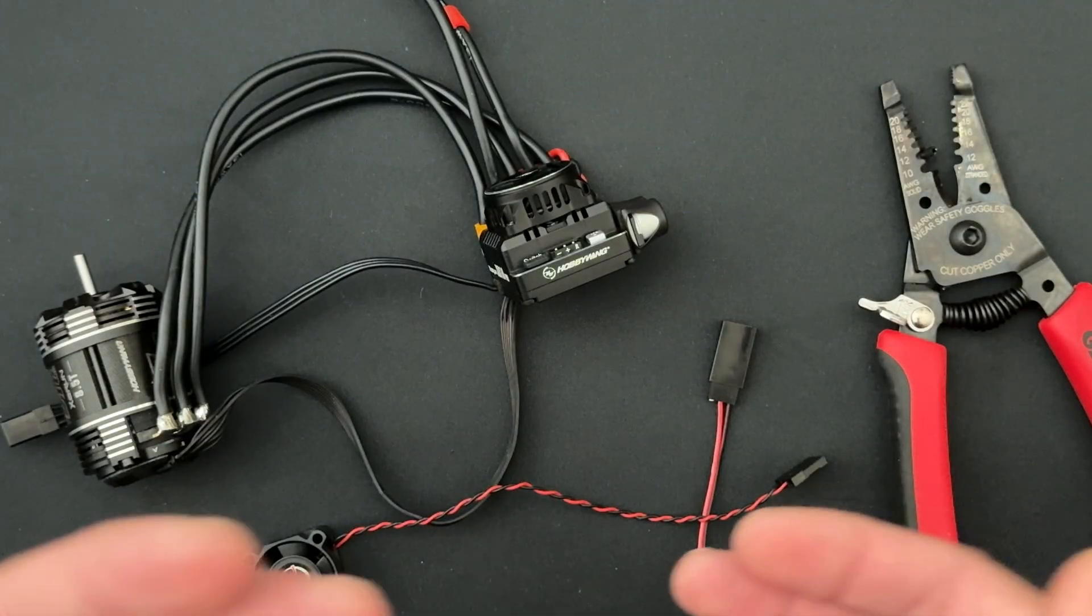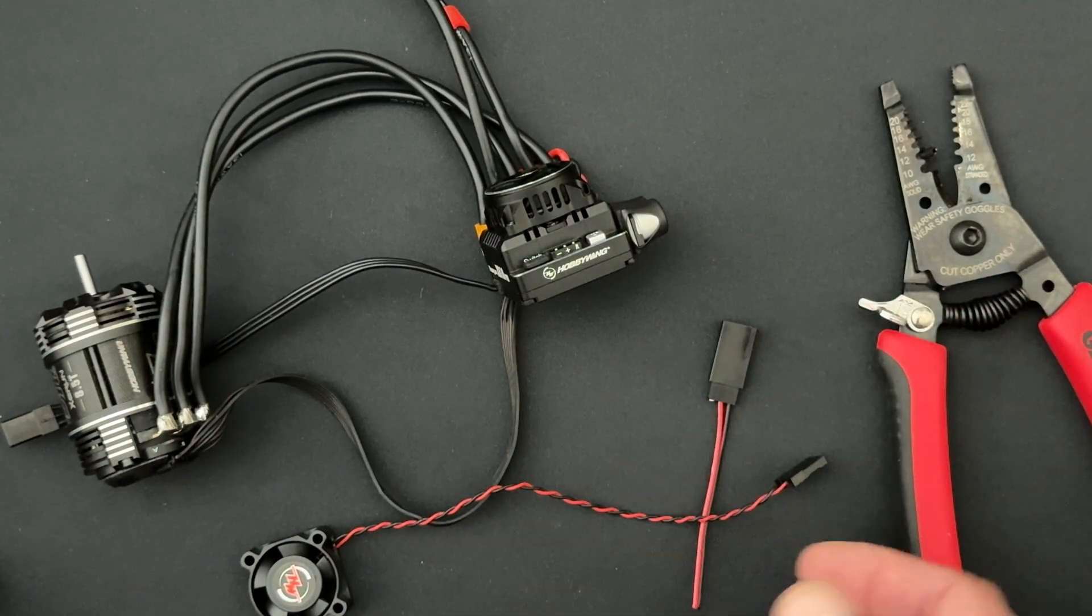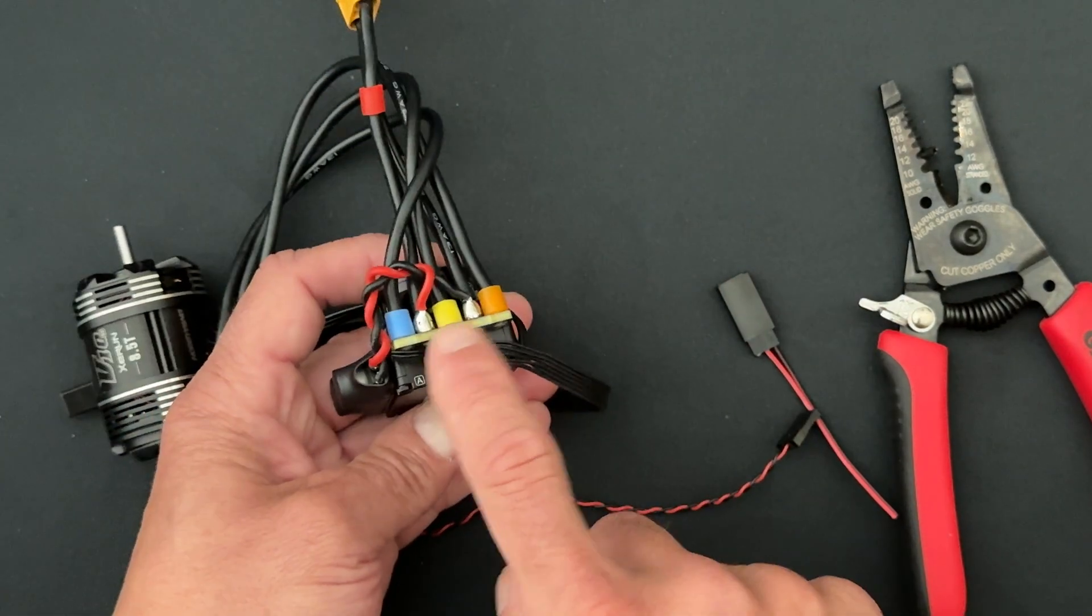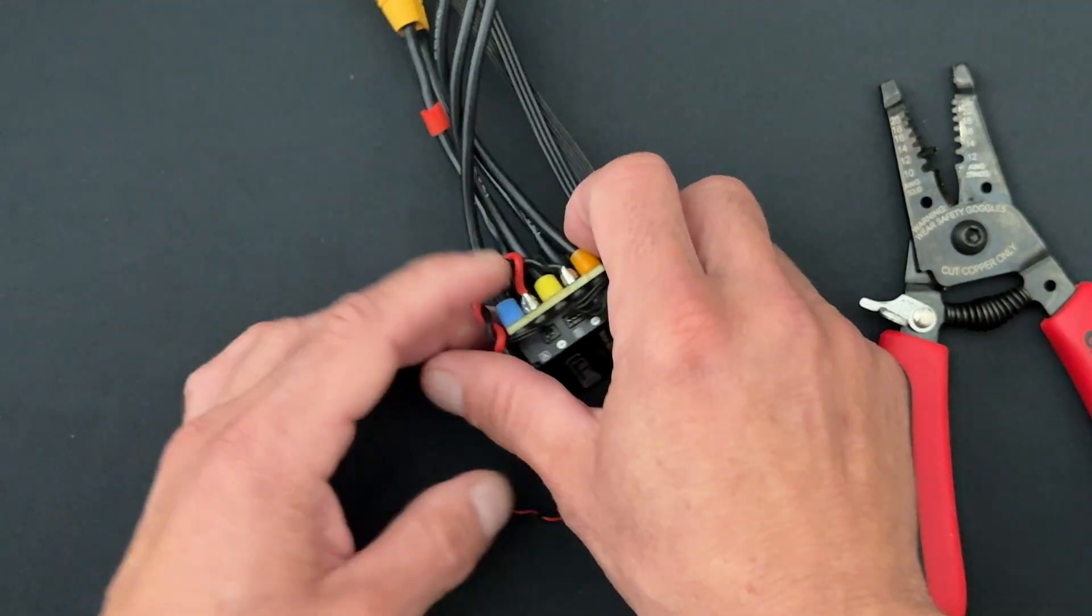However, because of the need for more airflow, pre-race and post-race cooling, racers have started to wire the fan directly to the actual battery terminals on the speed control itself. And I'm going to show you how we've been doing that.